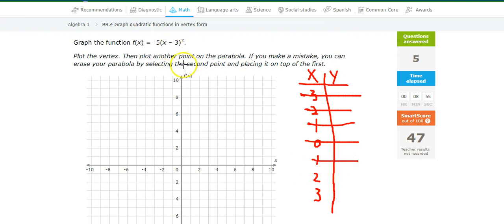Here we go. 2. 2 minus 3 is negative 1. Negative 1 squared is 1, times 5 is negative 5. At least now I'm on the graph. 3. 3 minus 3 is 0. 0 squared is 0, times negative 5 is 0.